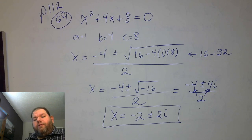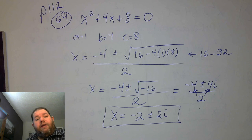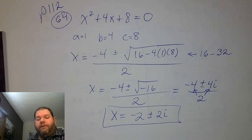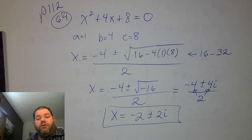I prefer to write the answer as negative 2 plus or minus 2i. But if you check the back of the book, they might write the answers as negative 2 plus 2i and negative 2 minus 2i as two different solutions. Both are correct — we can write them combined using the plus or minus symbol, or separated as two different expressions.